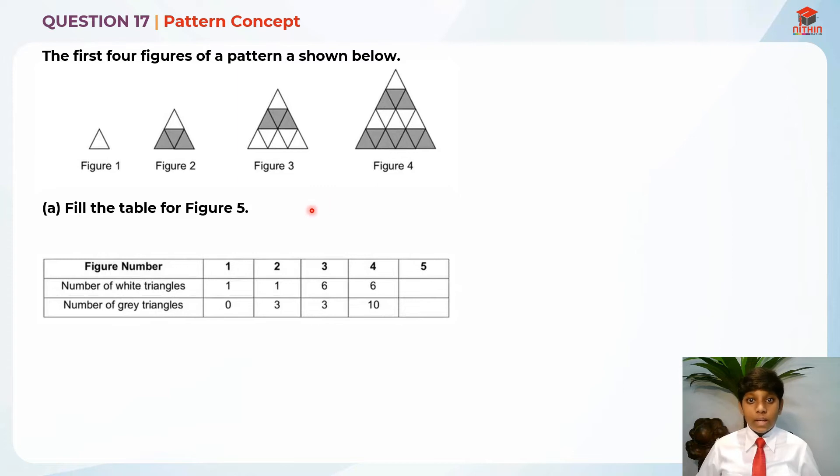Let's read the question for part A first. The first four figures of a pattern are shown below. Part A, fill the table for figure 5. In figure 1, there's 1 white triangle and 0 grey triangles. Figure 2, there's 1 white triangle and 3 grey triangles. In figure 3, there's 6 white triangles and 3 grey triangles. And in figure 4, there's 6 white triangles and 10 grey triangles. After this, I'm going to look at this. So here is white, after that they add grey, after that they add white again and grey again.